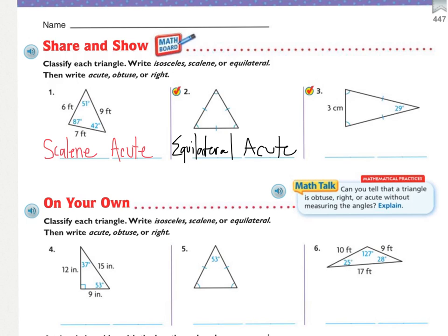Problem three gives us a mix. Starting with the sides: one side is three centimeters with no tick mark, while the other two sides both have tick marks, meaning those two are the same length and the third is different. Two sides the same, like twins — I saw Celise and her twin — that makes it an isosceles triangle. Looking at the angle measures: 29 degrees is definitely less than 90 degrees, and the other two angles are the same measure and are also less than 90 degrees — still acute. So this is also an acute triangle.